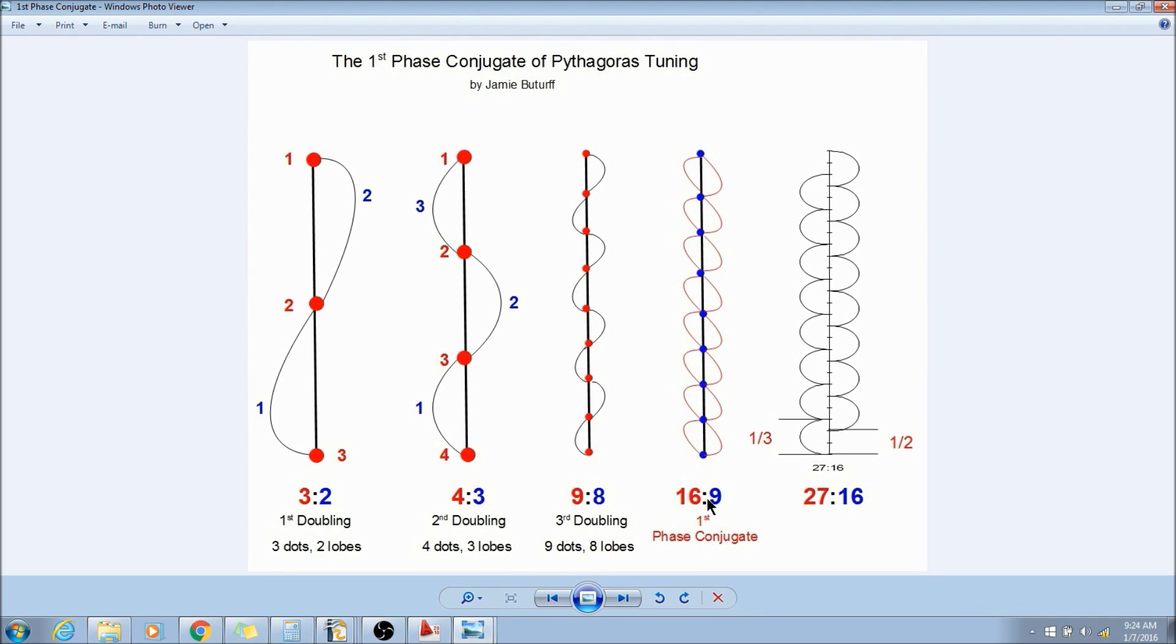It's pretty simple. But here's where it gets interesting, because this is where we arrive to the first phase conjugate. We can see that the nine is mirrored here. When we're doing a phase conjugate, what we have to do is reverse the dots.